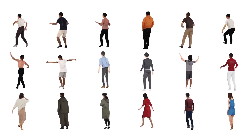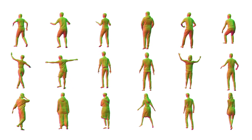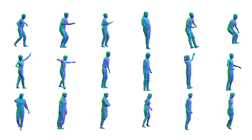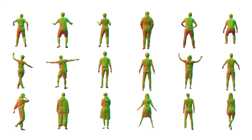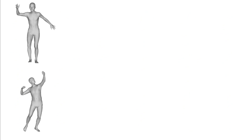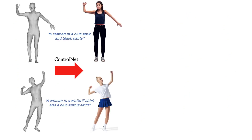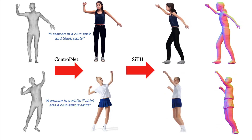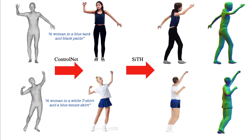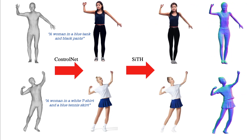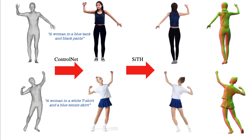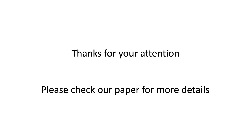Inheriting the generative power of diffusion models, we show that SITH generalizes to unseen images effectively. We further showcase a novel 3D creation application, combining our pipeline with a text-to-image diffusion model. SITH produces lifelike 3D-textured humans from AI-generated images and the given body poses. For more comprehensive experiments and details, please refer to our paper.